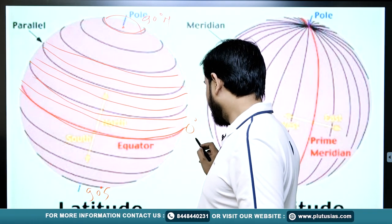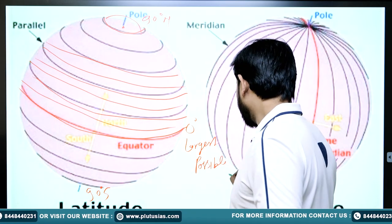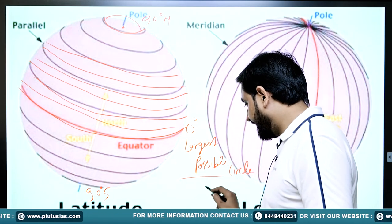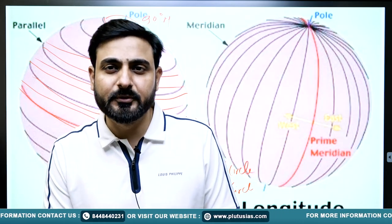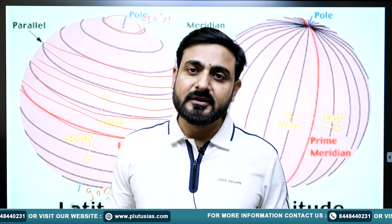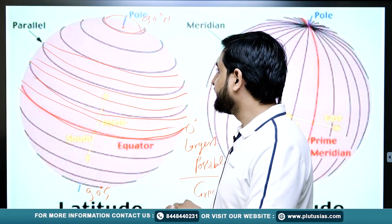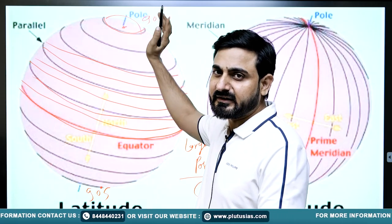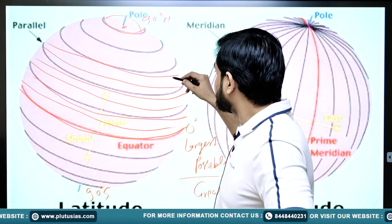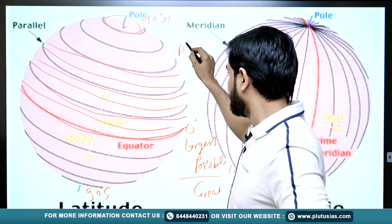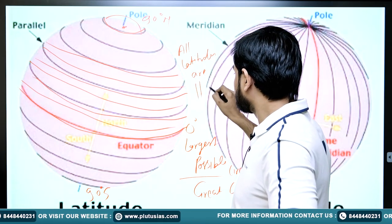The 0 degree latitude is the largest possible circle that can be drawn over the earth — we call it the great circle. As we move up or down from 0 degrees, the size and circumference of these horizontal lines continuously decreases, reducing to just a single point at the north pole and south pole. All these imaginary horizontal lines are parallel to each other, so we can say all latitudes are parallel to each other.